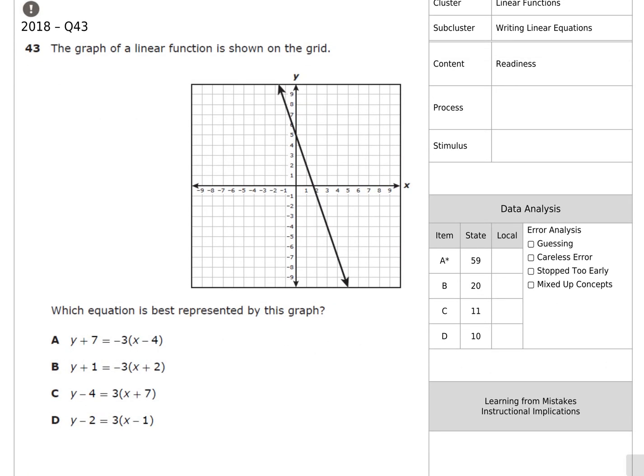In this next question, we have a graph. When we're comparing our answer choices in the graph, we typically start with whatever's the easiest to identify. When it's given in y equals mx plus b, slope-intercept form, we check the y-intercept. But we don't have the y-intercept here, so probably the easiest thing is to take a look at the slopes. We have two that are negative, two that are positive. This line is going down, so we know it's a negative slope, so we can eliminate both of these positive slopes.